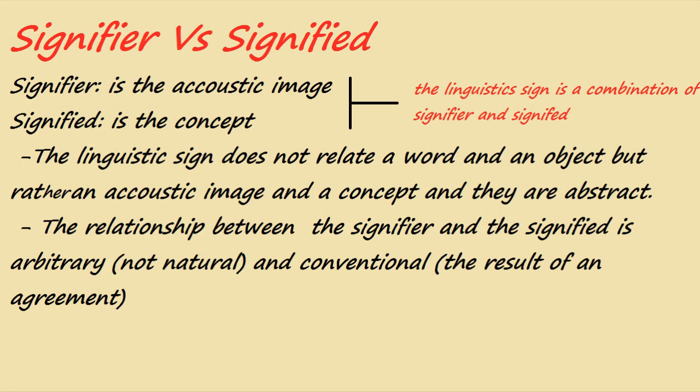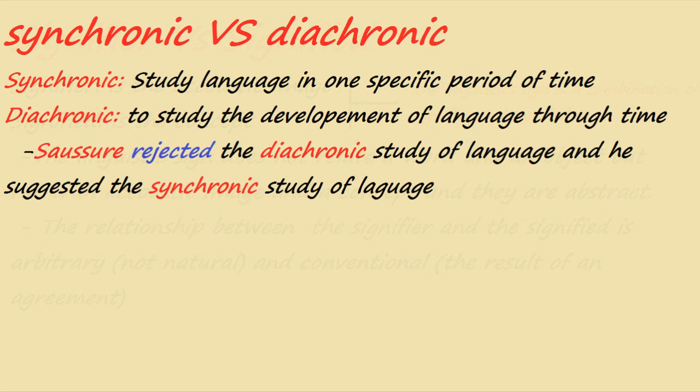The signifier and the signified are abstract, and the relationship between them is arbitrary. The fact that we say 'book' and it represents a concept doesn't mean there is a natural relationship between what we hear and the actual meaning — it is arbitrary, not natural. It must therefore be conventional: a group of people agree that this object will be named 'book,' and all of society refers to it as such. This arbitrariness is also a characteristic of human language.